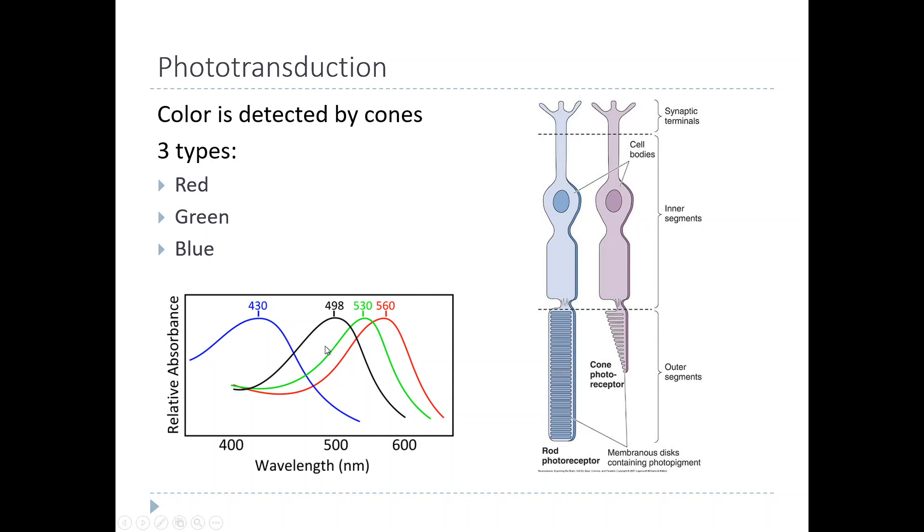And in fact, all the different colors - yellow, for example - the wavelength that corresponds to yellow is somewhere in between green and red. And so when yellow light hits the retina, it's going to partially activate both the green and the red cones, and so you will see yellow.